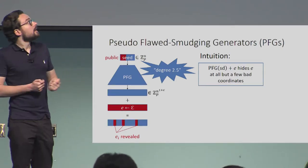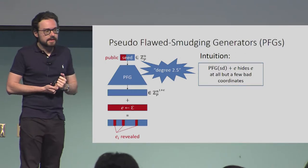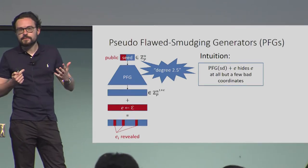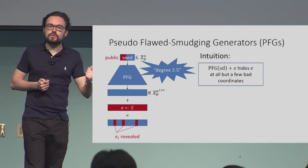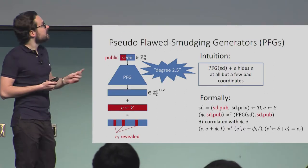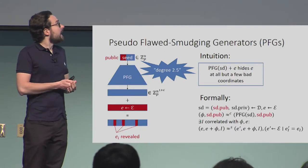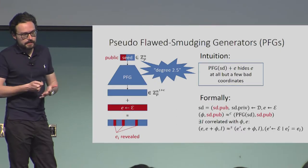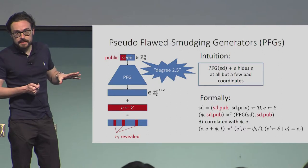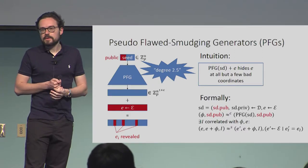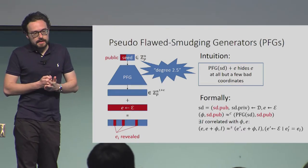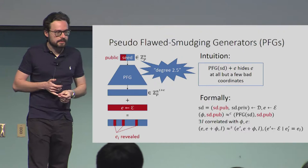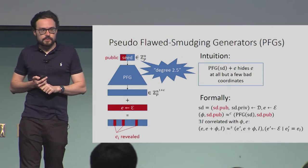What is this degree 2.5? Essentially, we want this hiding property to still hold if we reveal part of the seed. Computations over this public input are only counted half. So we essentially have a degree 3 polynomial, but it is only degree 2 over secret inputs. More formally, the seed consists of a public and a private part. We want that given the public part of the seed, the PFG output should be indistinguishable from some distribution phi that has this hiding property — meaning that given e plus phi, you cannot distinguish e from a fresh sample e-prime that equals e only on a few bad coordinates. And you are also told the set I, which coordinates are bad. It is enough if this property holds with some 1 over poly probability.